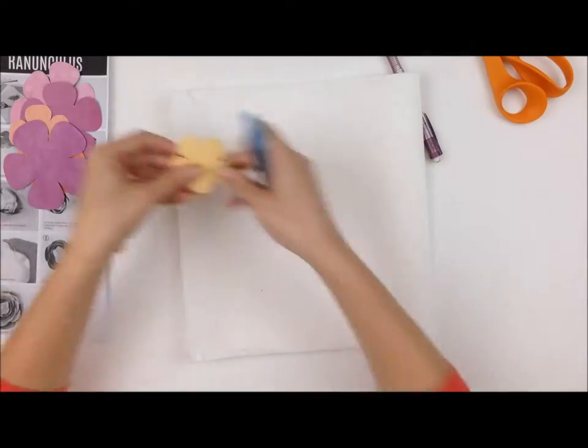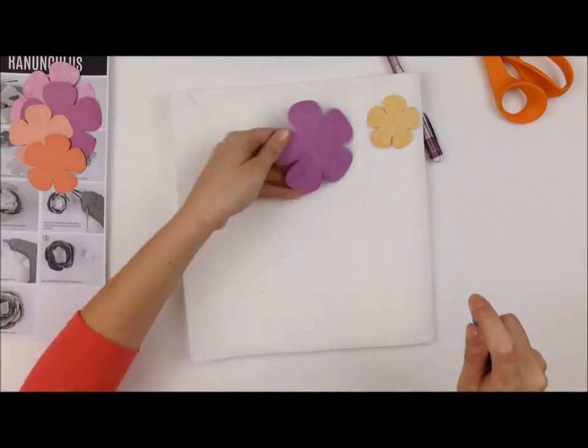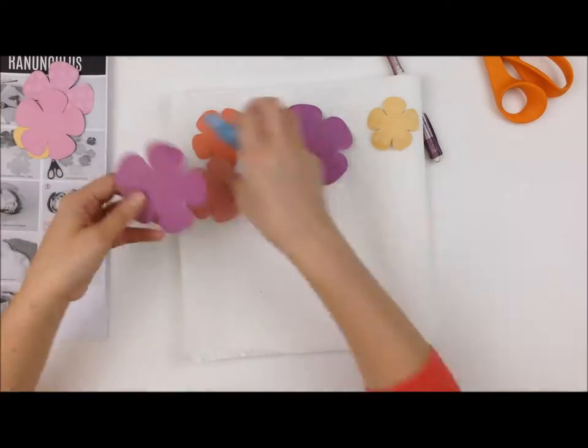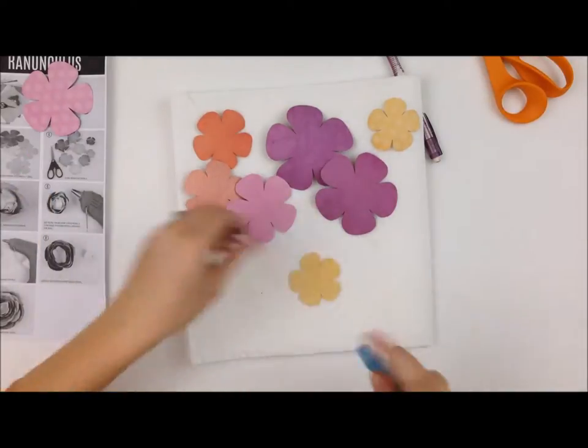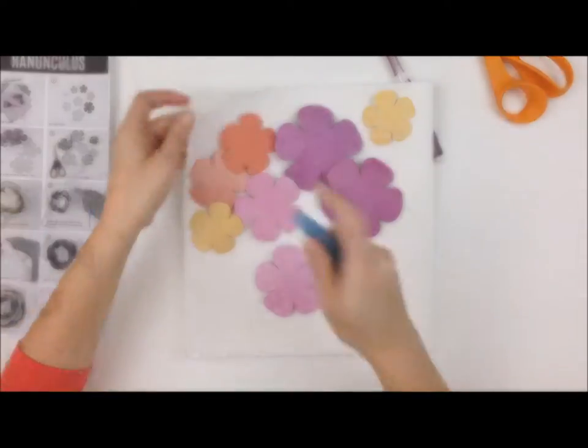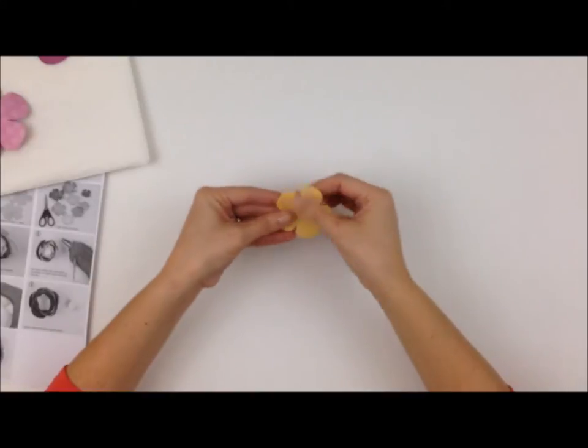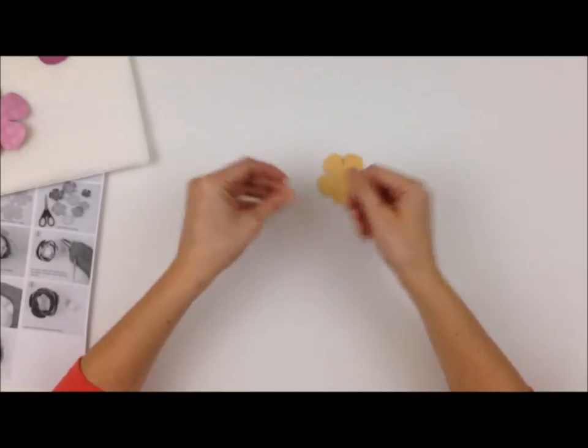Next you want to get a mister. It's just a little bottle with water inside and you're going to spray a fine mist of water on each piece. Just enough water so that the cardstock reacts to it and becomes really easy to fold and roll and curl.